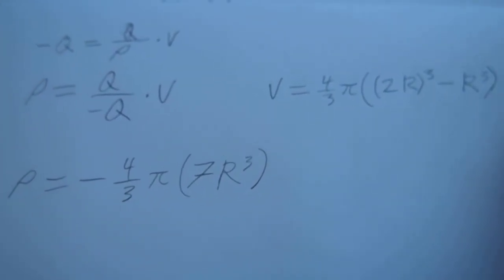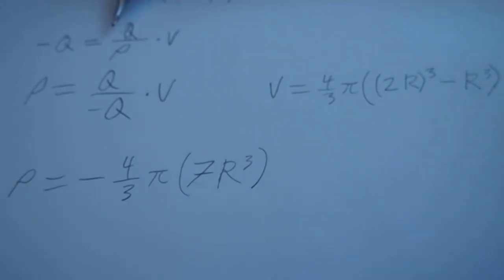Now, to find the charge density, which is rho, we have negative Q is equal to rho times the volume because the charge density times the volume has to add up to the opposite amount of charge that is in the inner shell because the net charge of the total system is zero. So we need the charge of the entire thing to be equal to negative Q.